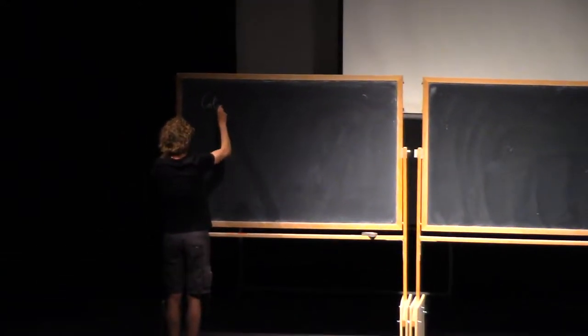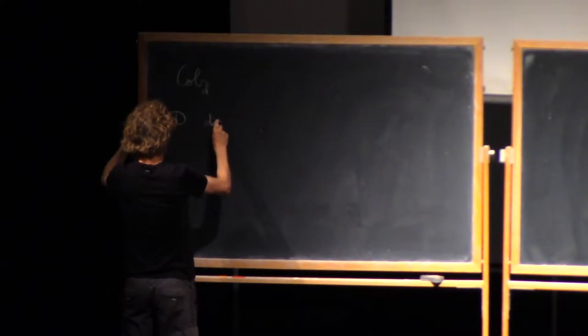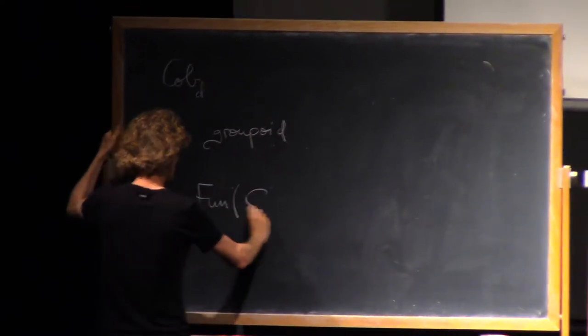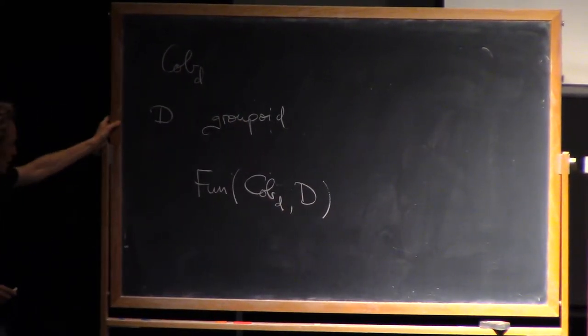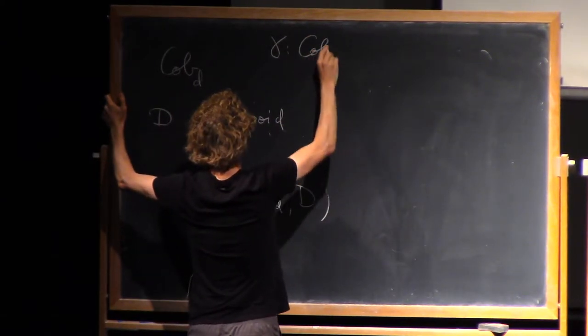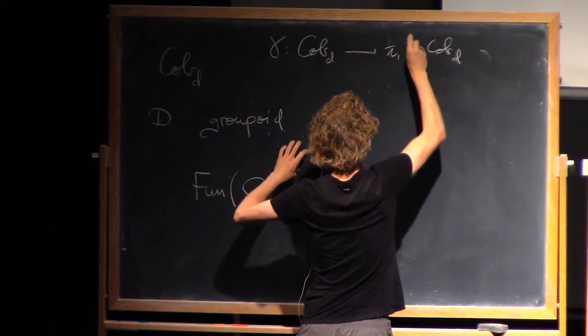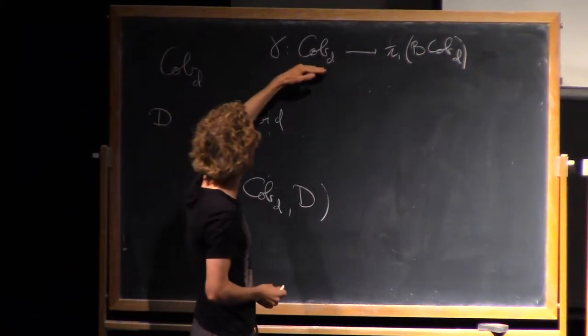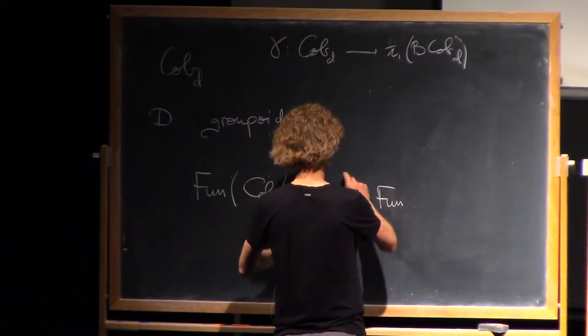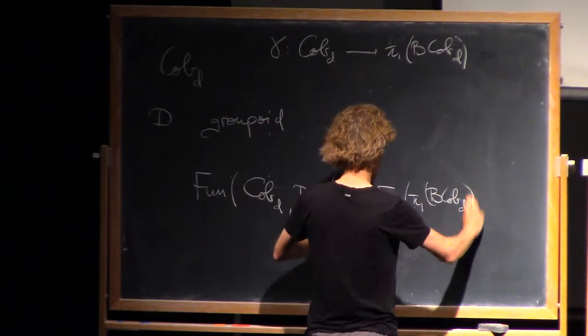The main object yesterday was the cobordism category, and the main thing I discussed was if D is a groupoid, we started functors from the cobordism category into D, the category of functors, and argued that precomposition is a canonical functor from any small category to the fundamental groupoid of its classifying space.